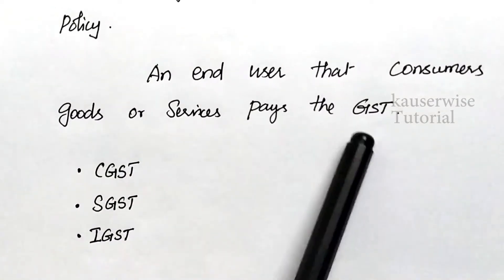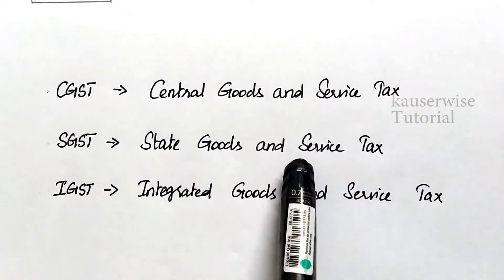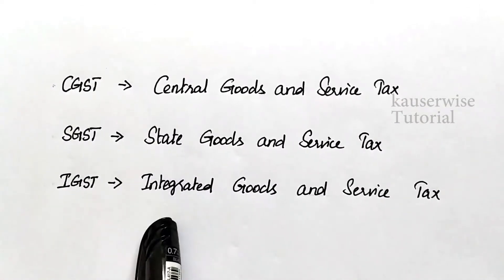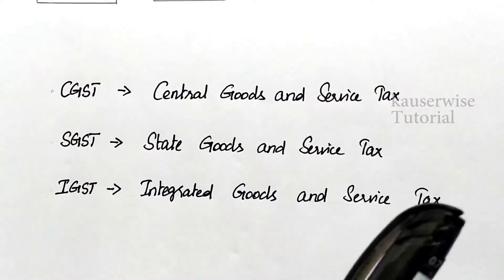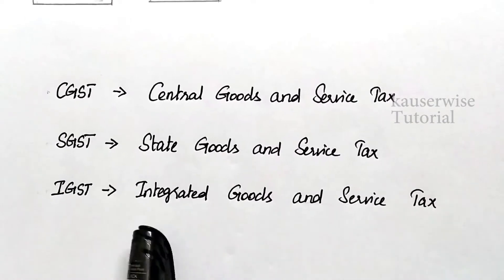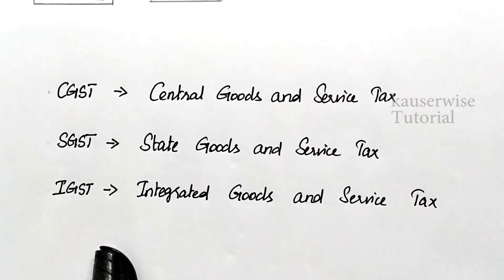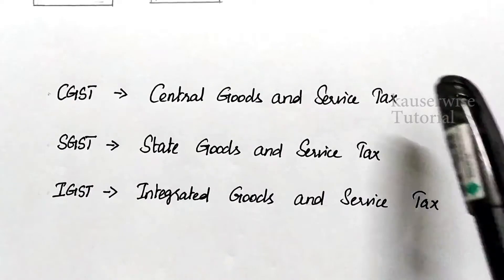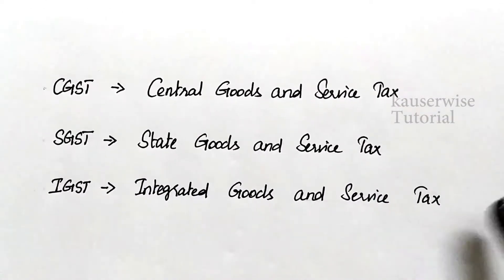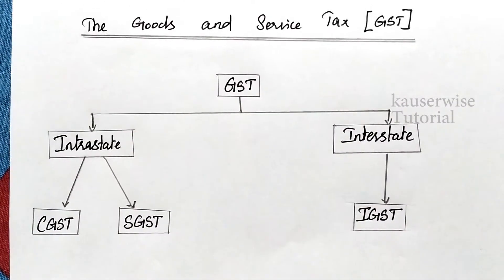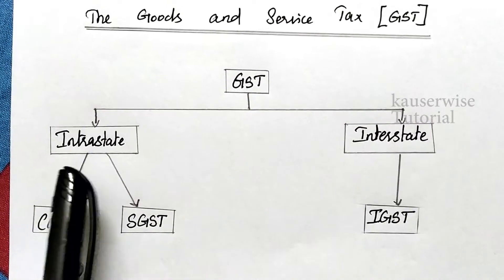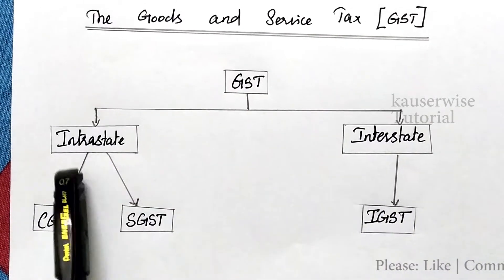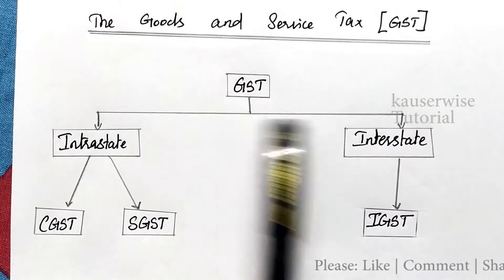The next important thing is what determines which category of GST is applicable. Before applying a type of GST, you need a clear idea about the transaction — whether the movement of goods and services is between one state and another, or within the same state. Central GST and State GST apply to intrastate transactions, while Integrated GST applies to interstate transactions.